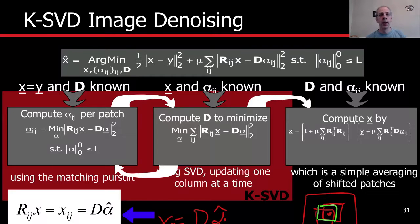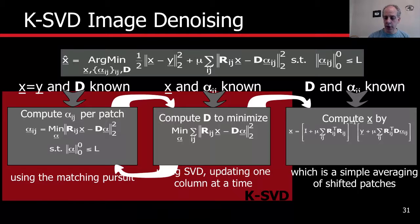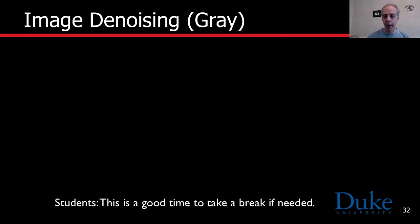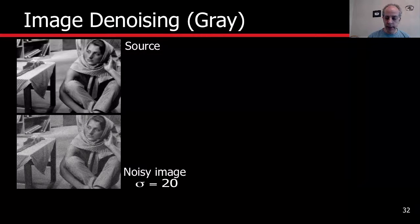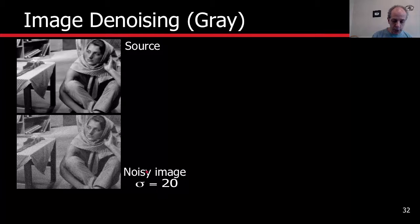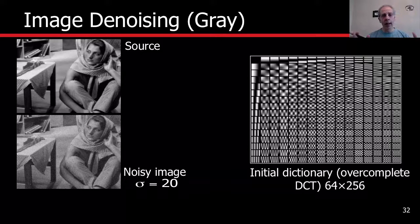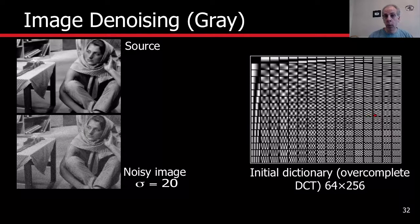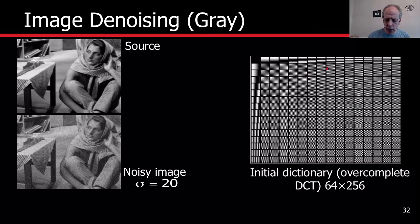Every patch: sparse coding and KSVD to learn the dictionary. Now let's see examples. We start from an image in gray values — no color. This is the source image, and this is the noisy image: we have added Gaussian noise with a given variance. We can initialize the dictionary with random patches from this image, with a dictionary learned offline, or with something we know is good — the discrete cosine transform dictionary, the one used in JPEG. In this case, we have initialized with that and then update using all the patches.